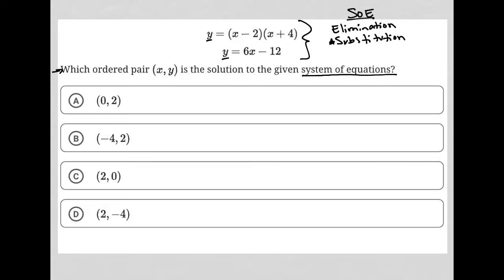Substitution is just basically saying I can replace this y with what y equals from the first equation so that I can create a new equation, which would say (x - 2)(x + 4) is equal to 6x - 12. And of course, I can simplify this. I can FOIL here and get x² + 2x - 8 once you finish FOILing, and I'd have equal 6x - 12 and could combine like terms.